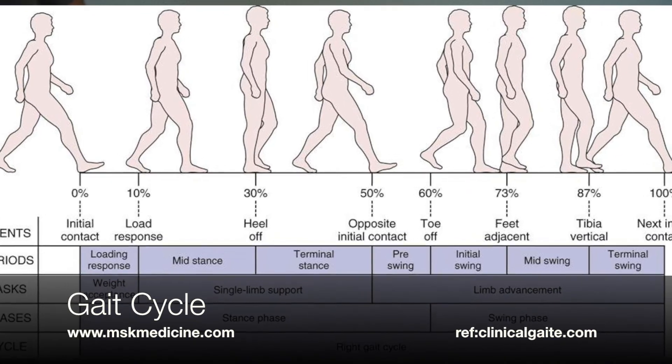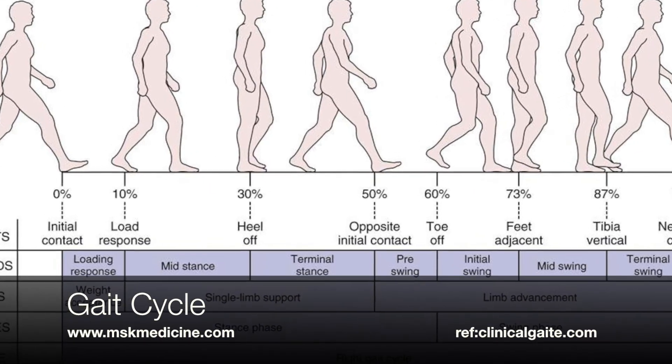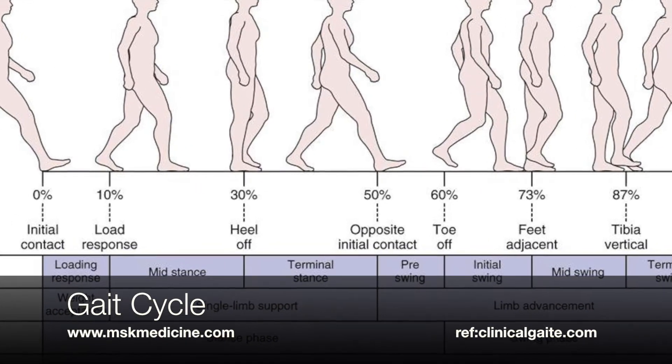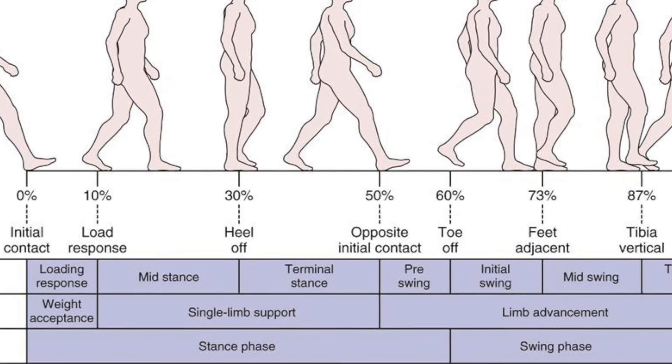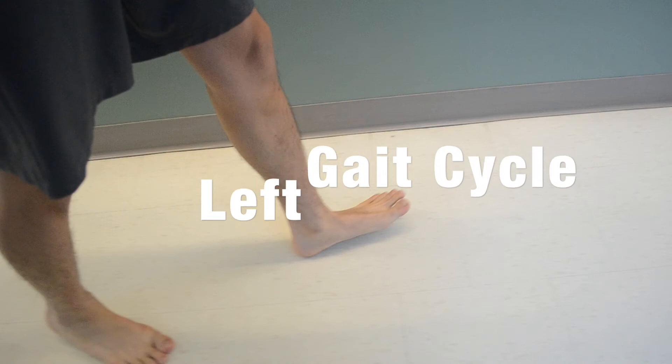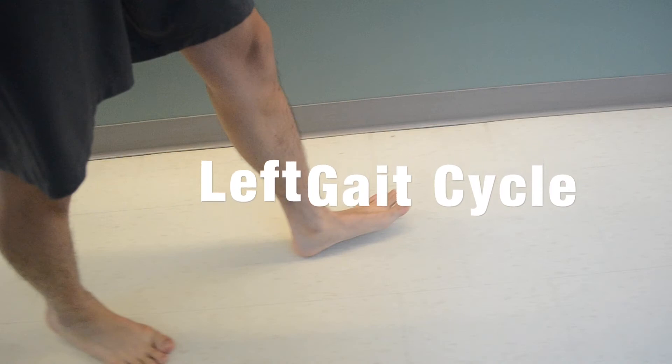The gait cycle is made up of two parallel cycles on the left and right side. Here we'll be looking at the left foot.